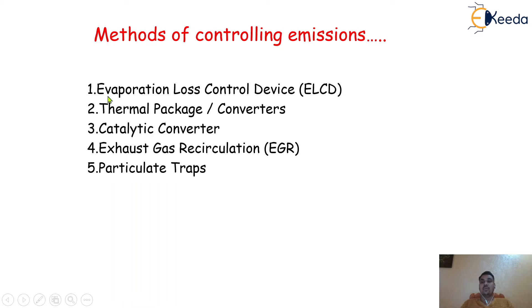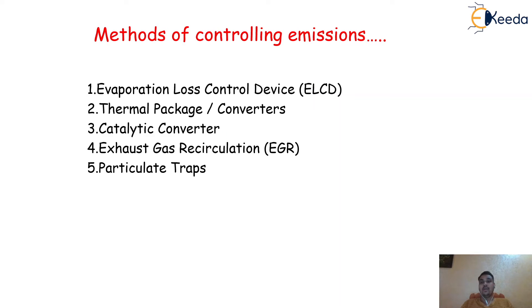The first method is the evaporation loss control device, also called the EL series. The second method is the thermal reactor or thermal converter, which is another device to control exhaust emission. The third method is the catalytic converter, which is very well known. Nowadays, this particular catalytic converter is available in every four-wheeler to reduce the harmful effects of engine emissions on the atmosphere as well as on human health.